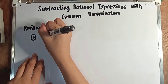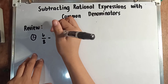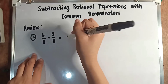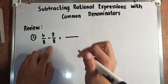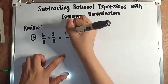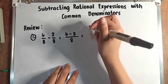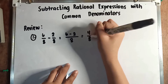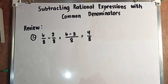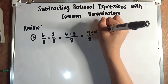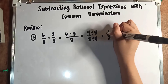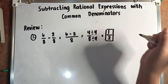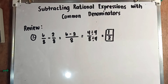Our first example: 6 over 8 minus 2 over 8. Same as adding fractions with common denominators, we will only copy the denominator 8 and subtract 6 minus 2, giving us 4 over 8. Can we simplify 4 over 8? Yes, we divide by 4. So 4 divided by 4 is 1, and 8 divided by 4 is 2. So the answer is 1 over 2.